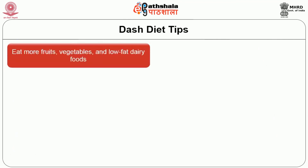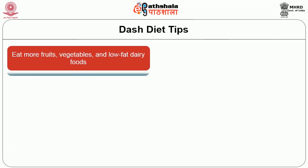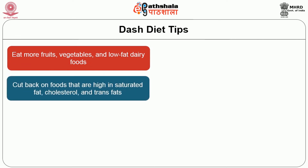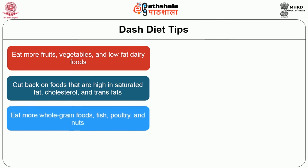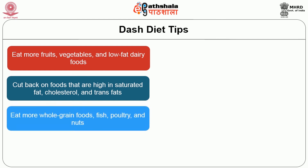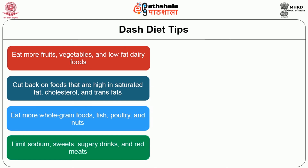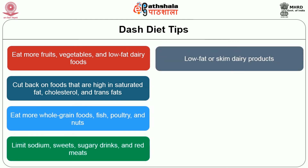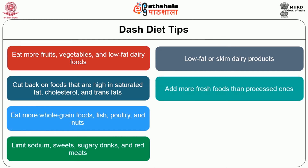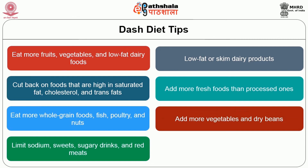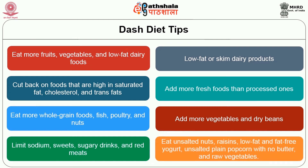The DASH tips are: eat more fruits, vegetables, and low-fat dairy foods; cut back on foods high in saturated fat, cholesterol, and trans fats; eat more whole grain foods, fish, and poultry; limit sodium, sweets, sugary drinks, and red meats; allow low-fat or skim dairy products; add more fresh foods than processed ones; add more vegetables and dry beans; instead of snacking on chips or sweets, eat unsalted nuts, raisins, low-fat yogurt, unsalted plain popcorn with no butter, and raw vegetables; and read food labels to choose products that are low in sodium.